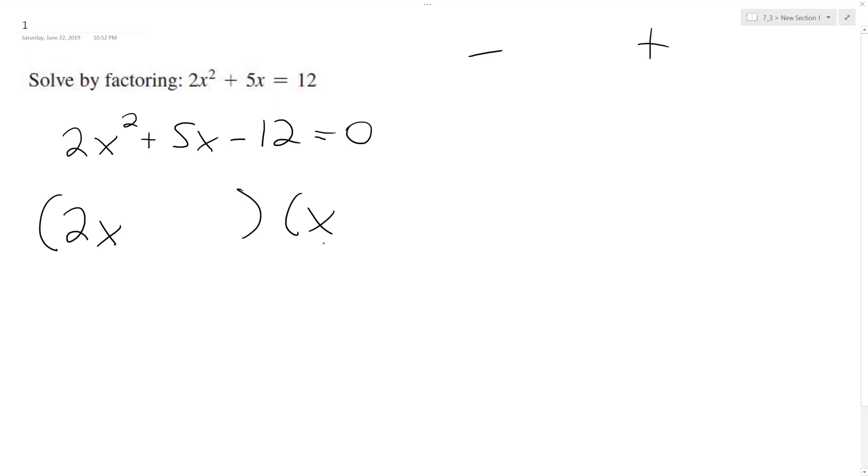So 2 times 4. So 2 times 4, so that's going to be a positive 4, and then a negative 3. So this looks like it's right, so let's try it.